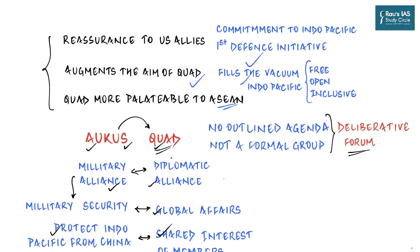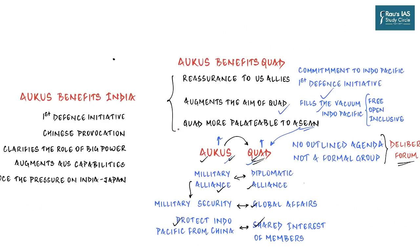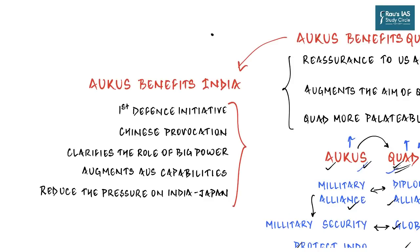Right now ASEAN countries have no other option except QUAD as an anti-China front. When there are two options — one openly military and one a non-military diplomatic alliance — ASEAN members could more easily join the non-military one. The UPSC syllabus expects us to analyze policies of developed countries on India's interests, so our discussion would be incomplete without covering AUKUS's impact on India.